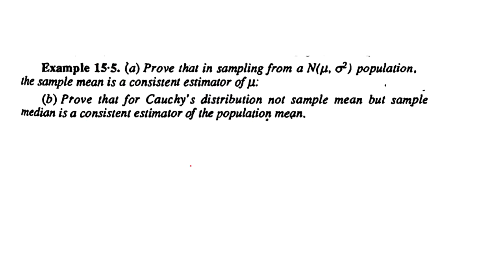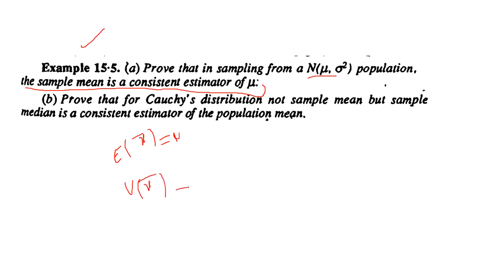From the FMS book: prove that in a sample from a normal distribution with mean μ and variance σ², the sample mean x̄ is a consistent estimator for μ. Using the necessary and sufficient condition: E[x̄] = μ, and Var(x̄) = σ²/n. As n increases, σ²/n tends to 0, so x̄ is a consistent estimator for μ.